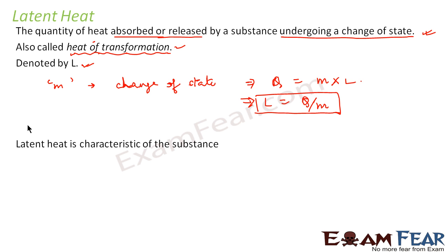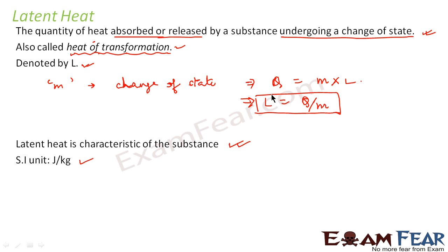Latent heat is a characteristic of the substance because it varies from substance to substance. For one particular material the value may be different from another material — it depends on the nature of the substance. The SI unit is joule per kg, which is clear from the expression: Q in joules divided by mass in kg gives latent heat in joule per kg.